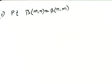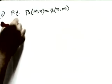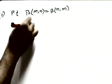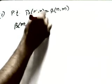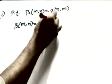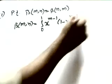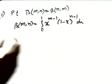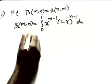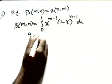In today's class we are going to do some proofs of the formulas of beta functions and gamma functions. On the board there is a formula: beta of m comma n equals beta of n comma m. Let me prove this one. We start with the definition of the beta function: beta of m comma n equals the integration from 0 to 1 of x^(m-1) times (1-x)^(n-1) dx.